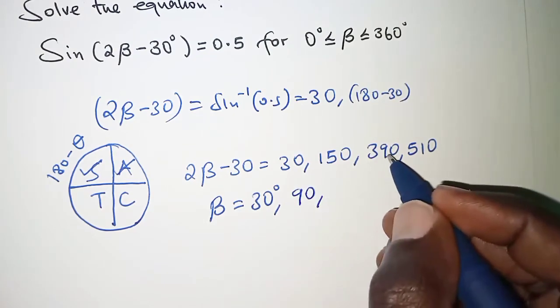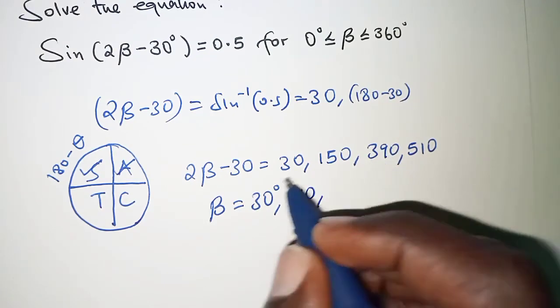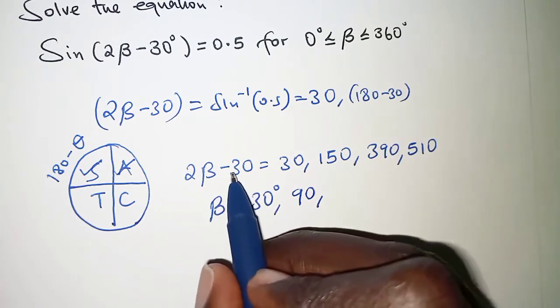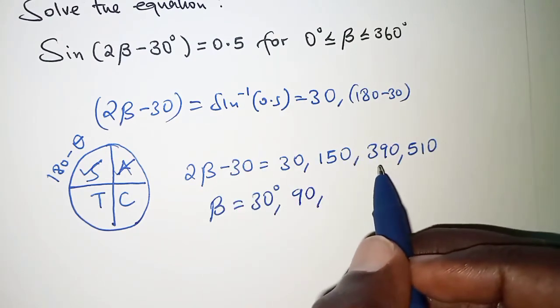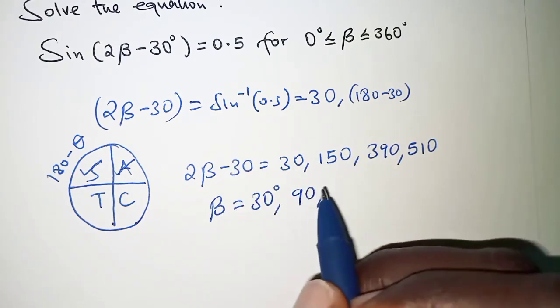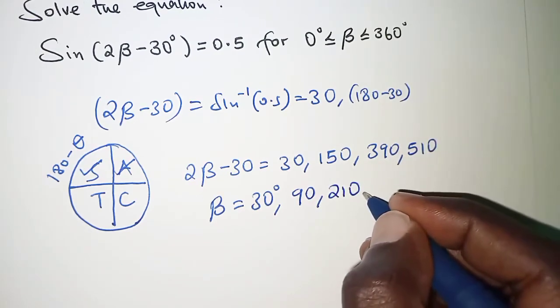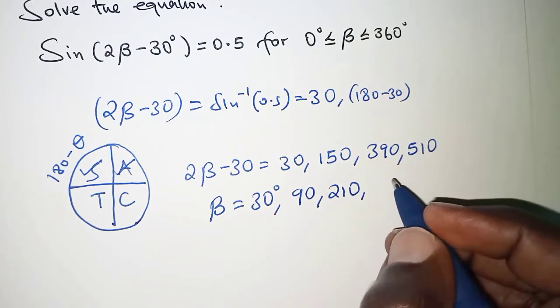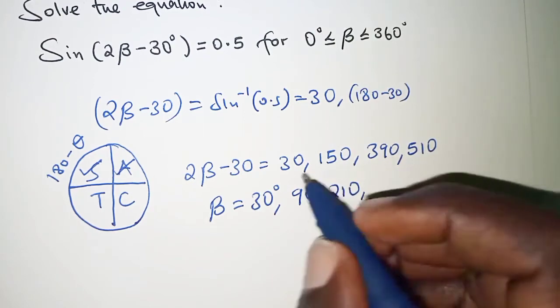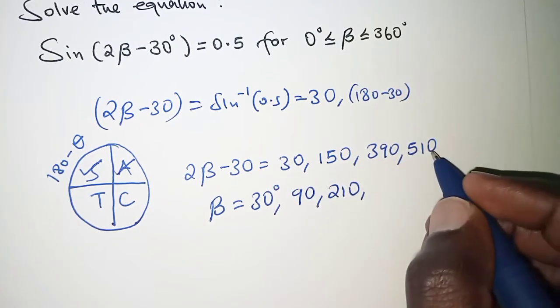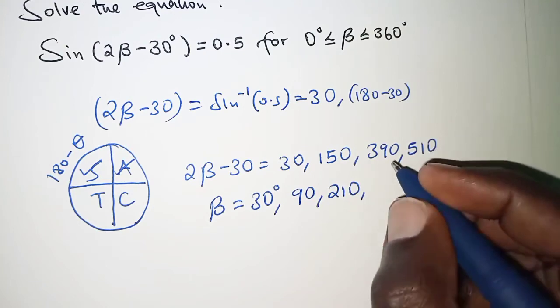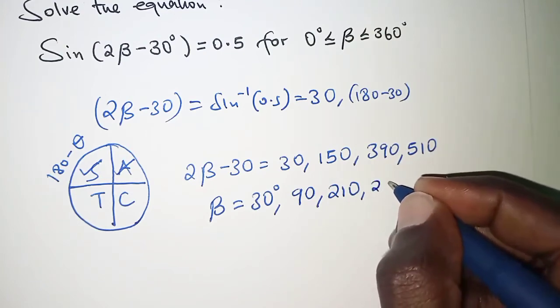Then for 390 we will have negative 30 crossing so that you have 420. 420 divided by 2, that is 210. And then for 510, 510 plus 30, that is 540. 540 divided by 2, that is 270.